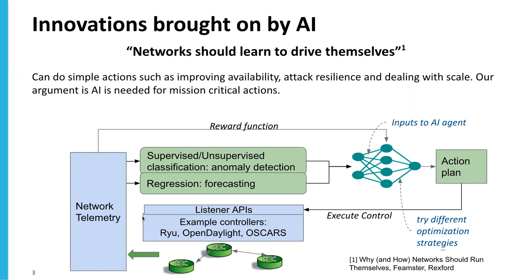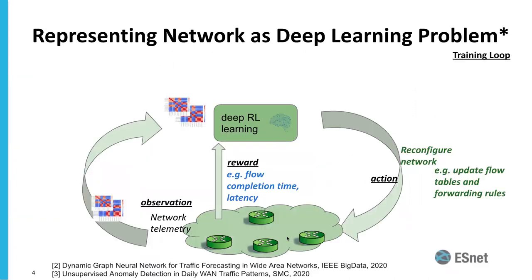This is my summary of how a self-driving network tackles three different AI approaches. Looking at the network as a deep learning system, we have the network telemetry as our observation. We train deep reinforcement learning to do the right action — basically reconfiguring the network by updating flow tables and forwarding rules. For the reward function, we're looking at flow completion time or latency across the network. This can be defined as how we want the network to be optimized over time.